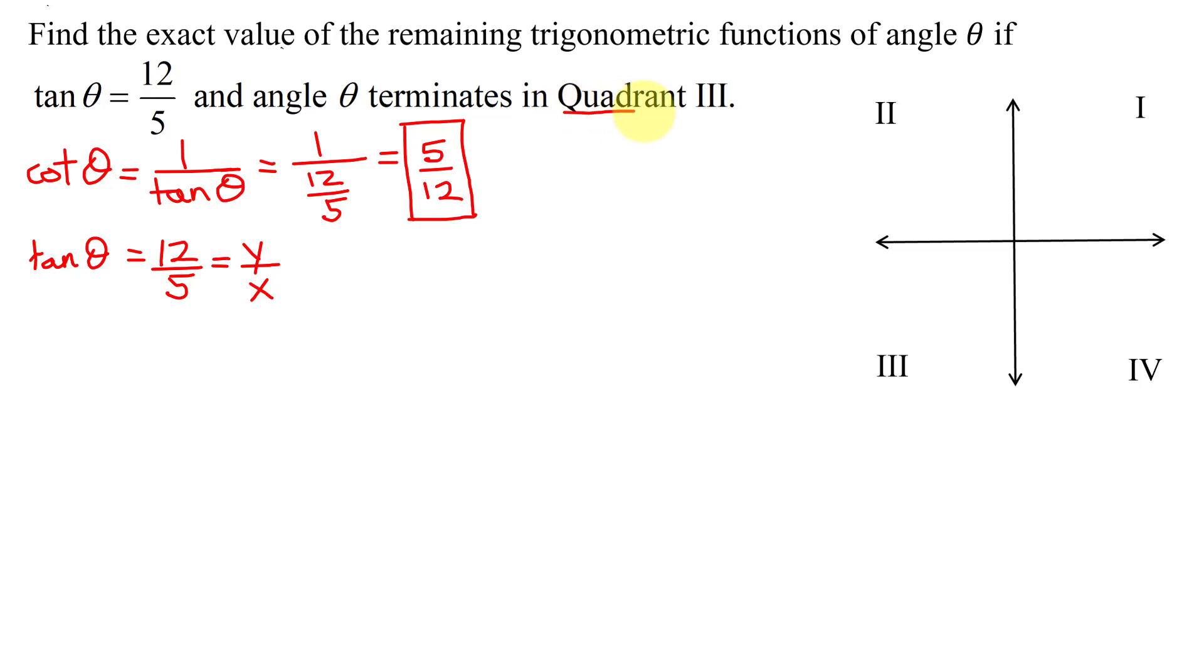Our angle terminates in quadrant 3, so the terminal side is going to be down here somewhere in quadrant 3. My angle theta could be this angle here. It could also be one full rotation and then that part. It could be a negative angle. I just know my terminal side lies in quadrant 3.